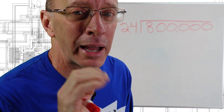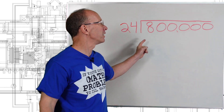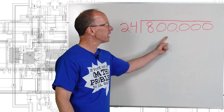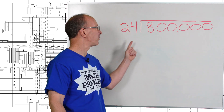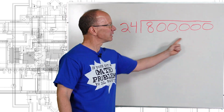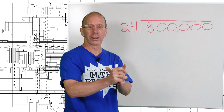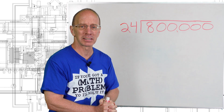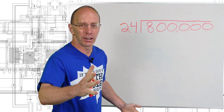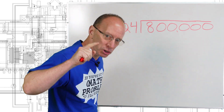Hey, you guys ready for another math challenge? I have one for you. It is a division problem: 800,000 divided by 24. There's a bunch of zeros here. Don't worry, we're gonna take it step by step. Easy, cheesy, lemon squeezy. Are you ready to get started? Yeah, let's do it.